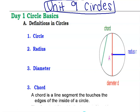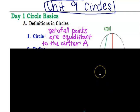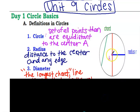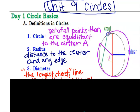Let's get started on the definitions. So the circle is the set of all points that are equidistant to the center. In this circle, that is point A. All these points on the outside are equal distance to the center, and that's what makes this circle. So if I took this and I had a string, I could go all the way around to make that circle, make that edge.